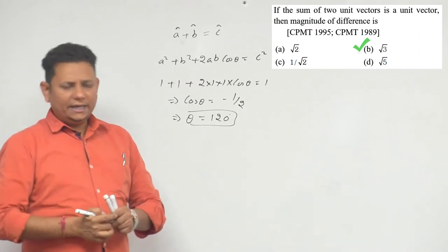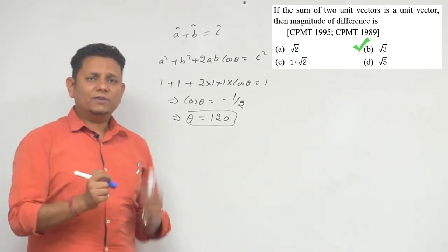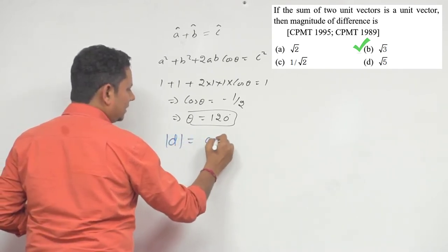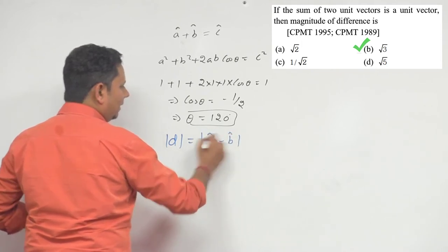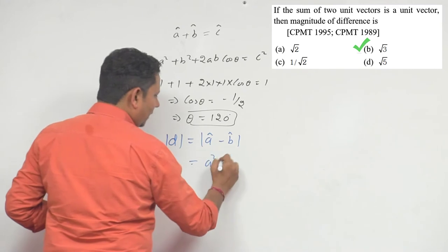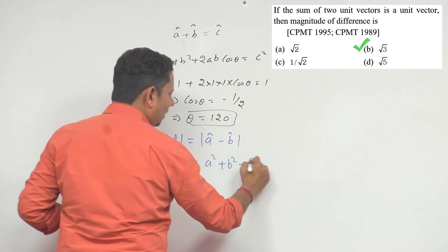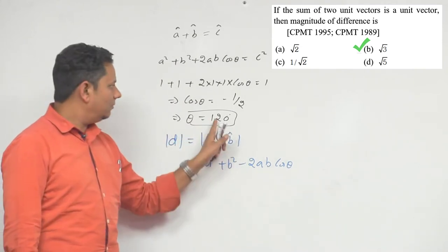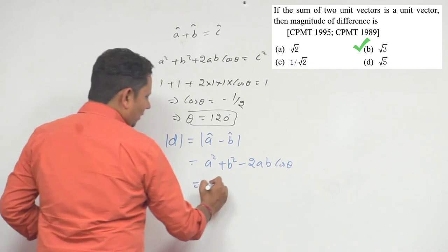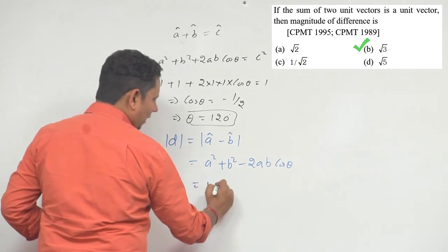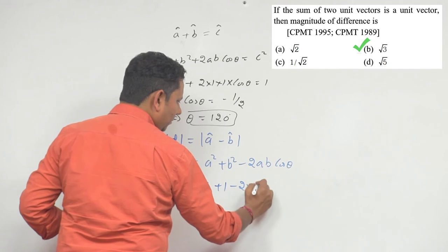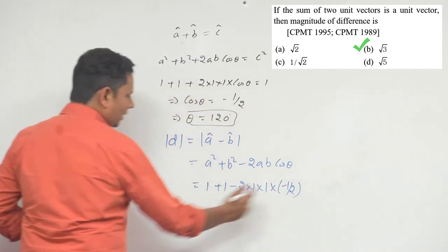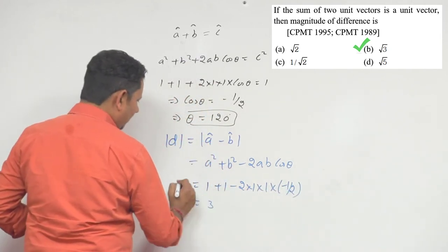Now हमें बताना है magnitude of difference क्या होएगा। Let d vector = a cap minus b cap — यह difference हमें बताना है। So |d|² = a² + b² - 2ab cosθ. We already know cosθ = cos120° = -1/2. So this becomes: 1 + 1 - 2 × 1 × 1 × (-1/2) = 1 + 1 + 1 = 3.